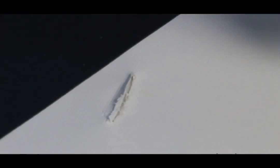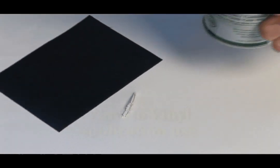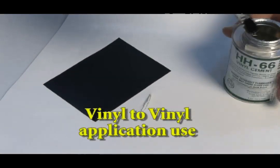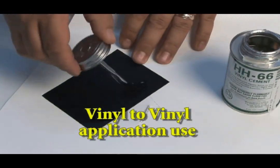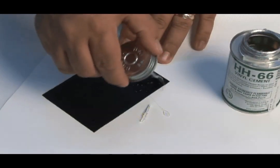HH-66 works great for vinyl repairs. Let's say you have an awning with a hole in it like you have here and you want to repair it with vinyl. HH-66 is by far the best glue out there.